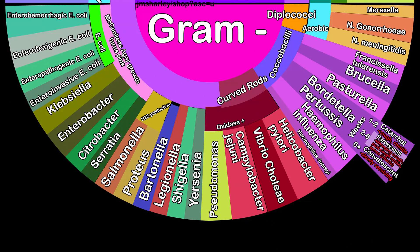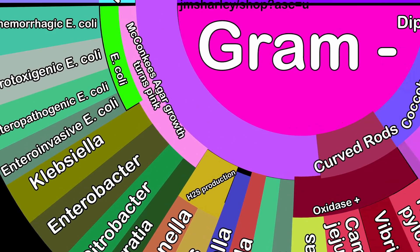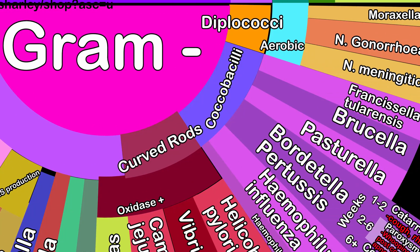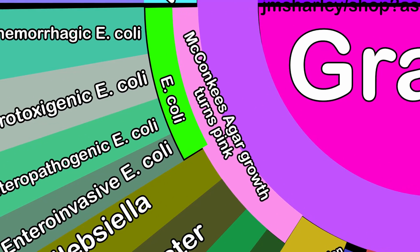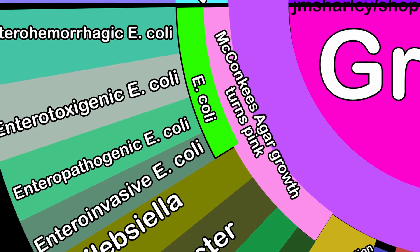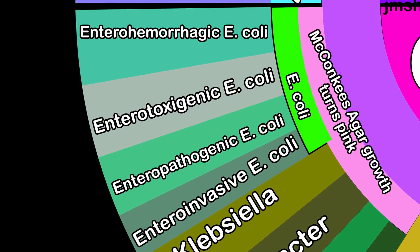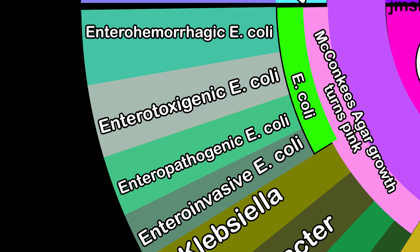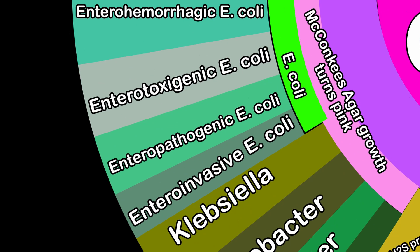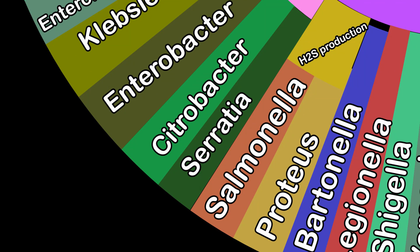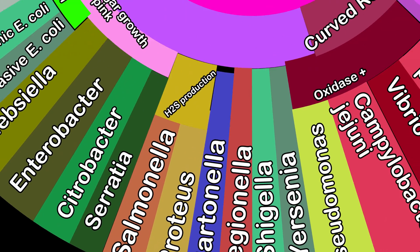We have the bottom half of gram-negative bacteria: bacilli, curved rods, coccobacilli, diplococci. MacConkey's agar has to do with lactose metabolism. If a germ can ferment lactose, it turns pink — E. coli is a big one that falls into this category. Hydrogen sulfide production is another characteristic to define germs by, and salmonella and proteus both fall into that category.